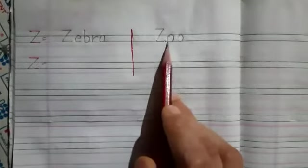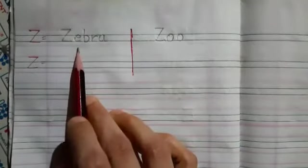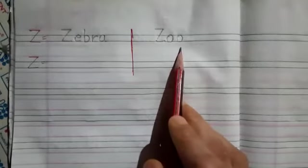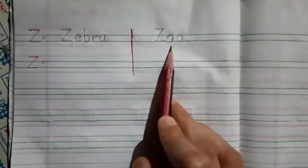Z for zebra and zoo. Zebra means zebra and zoo means chidiya ghar.